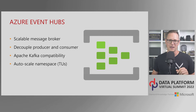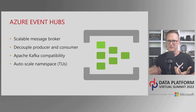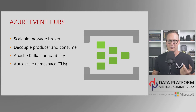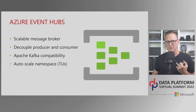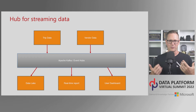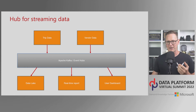I can use the Apache Kafka 1.0 protocol and use Kafka tools by connecting them to Event Hubs, including the Kafka Spark APIs which I'll actually use in this example. We auto-scale Event Hubs by setting up at the namespace level — up to 10 event hubs fit in a namespace. I have producers sending trip data and vendor data into Azure Event Hubs, and multiple consumers at the bottom: my data lake consumer, a real-time report, and a user dashboard on the website showing users their latest trip.